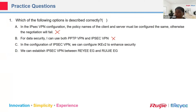Third statement: In the configuration of IPSec VPN, we can configure IKE version 2. No — only version 1 is supported, so this statement is also incorrect.